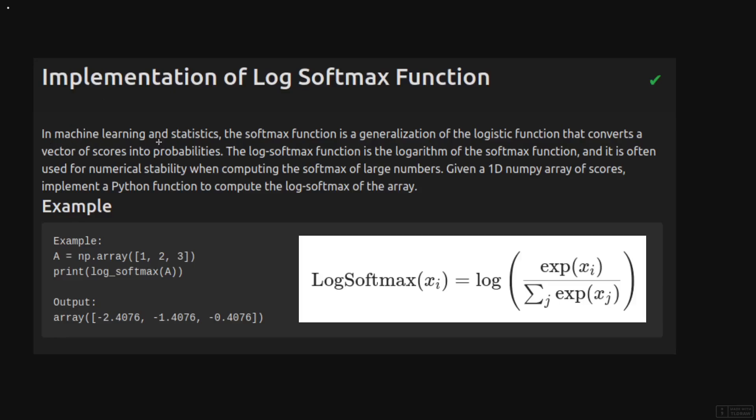Let's read out the problem statement. In machine learning and statistics, the softmax function is a generalization of the logistic function that converts a vector of scores into probabilities. The log softmax function is a logarithm of the softmax function and is often used for numerical stability when computing softmax of large numbers. This part is very important. Given a 1D numpy array of scores, implement a Python function that computes the log softmax of the array.